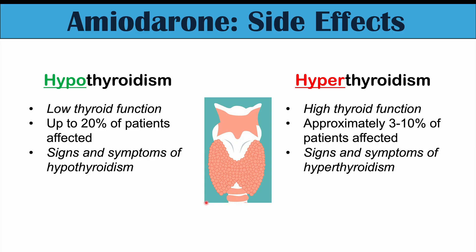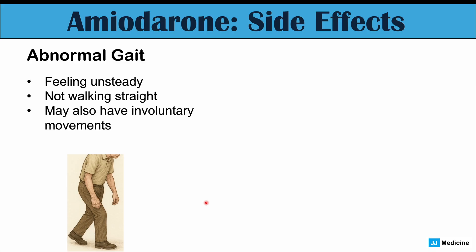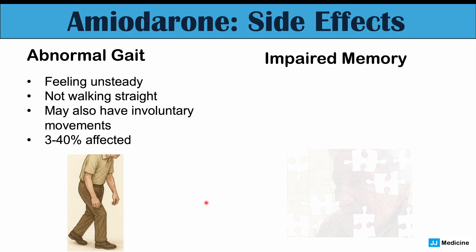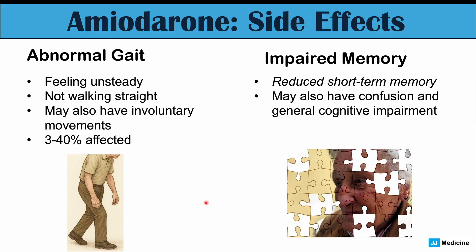We can also see abnormal gait in some patients — where patients are not as steady walking, feel unsteady, may not walk in a straight line, and can have involuntary movements. Anywhere from 3% to 40% of patients can be affected. Impaired memory is also another side effect, often presenting as reduced short-term memory. Working memory may be affected, along with confusion and general cognitive impairment, especially with long-term use. Again, 3% to 40% depending on the study, dosing, and duration.